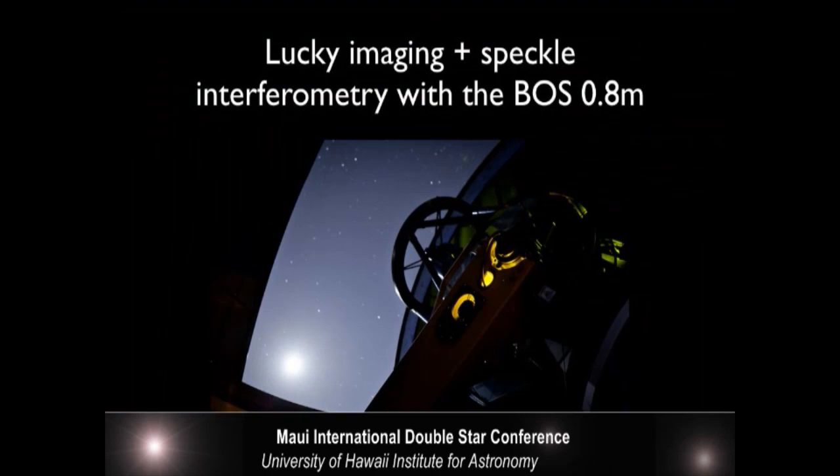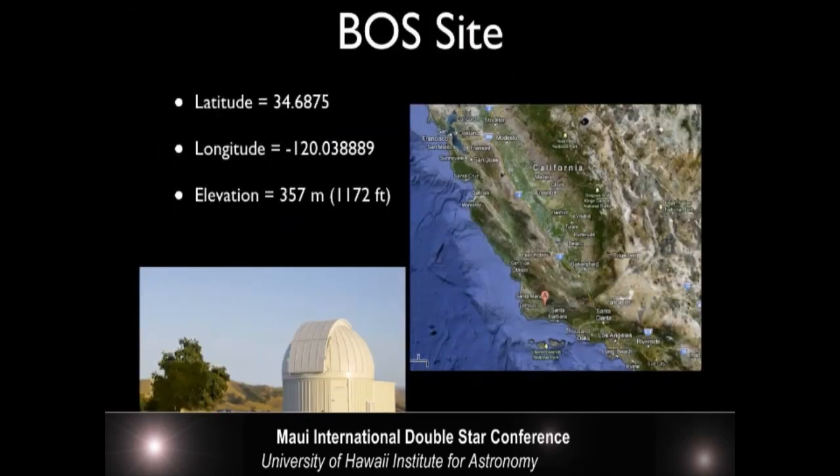First of all, just a little introduction about the BOSS telescope. Here it is. It's in California, near Santa Barbara. LA is right down here. San Francisco is up here. You can see that the altitude is not very high, but it's actually a pretty dark site. The seeing is not great, but the sky brightness is pretty good.